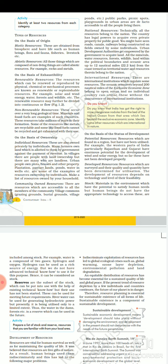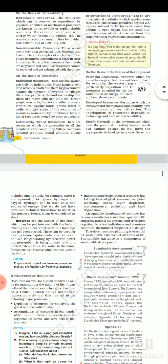Ab hain developed resources, yani ki viksit sanshadhan — ye woh sanshadhan hain jinaka sarvekshan kiya ja chuka hai, unke upyog ki gunvatta aur matra nirdharit ki ja chuki hai. Ye sare developed resources kahalate hain. Sanshadhanon ka vikas praudyogiki aur unki sambhavita ki astar par depend karta hai. Ab stocks — materials in the environment which have the potential to satisfy human needs, but human beings do not have the appropriate technology to access these. For example, water is a compound of two gases; hydrogen can be used as a rich source of energy, but we do not have advanced technology to use it. Hence it can be considered as stock.